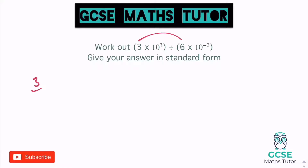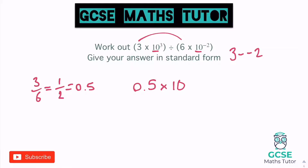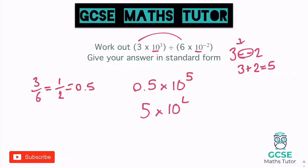Next division example: 3 divided by 6. Writing as a fraction simplifies to one half, which as a decimal is 0.5. For the powers, we subtract: 3 take away negative 2 turns into 3 plus 2, giving a power of 5. So 0.5 times 10 to the 5. To put this in standard form, we make 0.5 bigger to 5, and to balance, make the power smaller — from 5 to 4. Final answer: 5 times 10 to the 4.